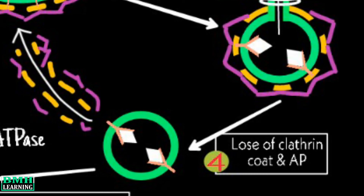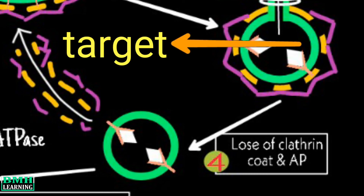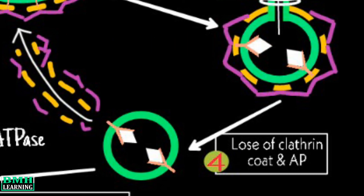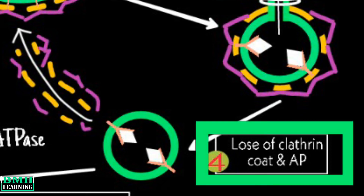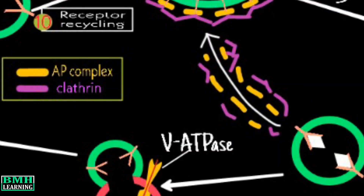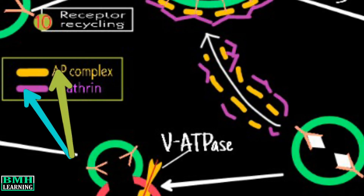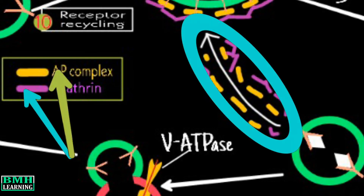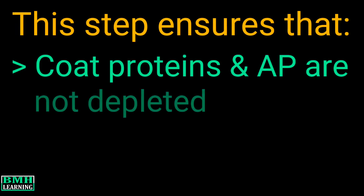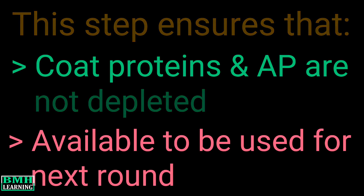In order to fuse the vesicle with the target, the V-SNAREs, which are not shown in this diagram, must be exposed. So for this we follow step 4: the loss of clathrin coat and AP. Here the clathrin and AP proteins are disassembled. This step ensures that coat proteins and AP are not depleted, and are therefore available to be used for the next round.